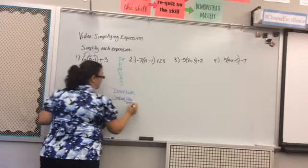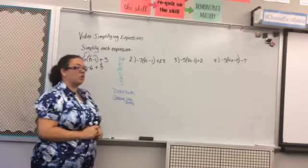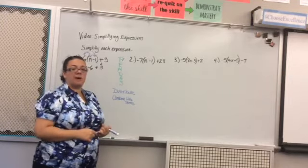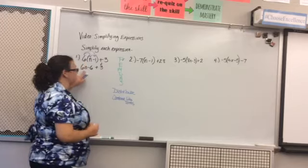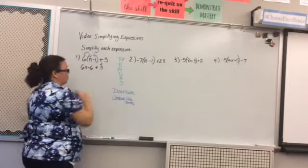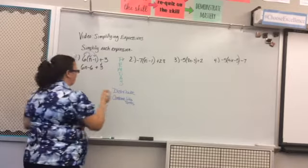So what that means is do I have any terms that look the same in a few aspects? Do they have the same variable? Do they have the same exponent? So first term I have is 6n. Are there any other terms that have an n? No, they're all just numbers. So 6n doesn't have any terms to combine it with. I'm just going to bring it down.